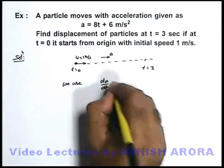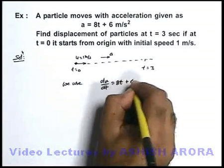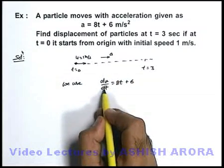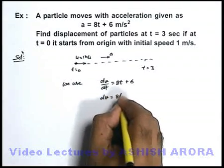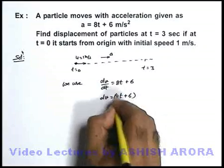dv/dt is equal to 8t + 6, as acceleration can be written as dv/dt. It can be further written as dv is equal to 8t + 6 into dt.